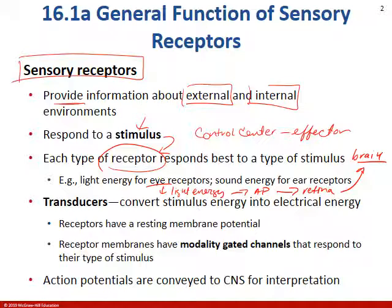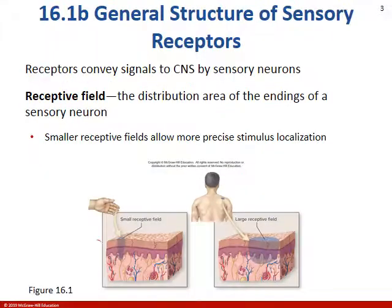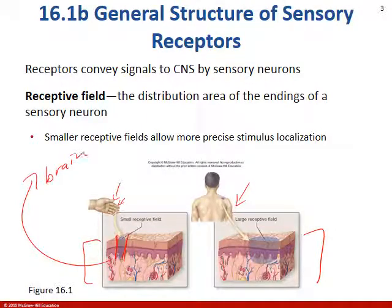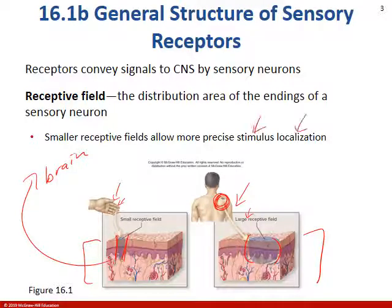So we're going to talk about some complex special senses as we move through this PowerPoint. When it comes to skin, certain areas of the body have really small receptive fields and some have very large. If you were to prick your finger, you know exactly which finger and where on your finger once that sensory message makes it to the brain. On the back or the shoulder, there's a really large receptive field — you know something is wrong, but you cannot pinpoint exactly where that stimulus is localized.